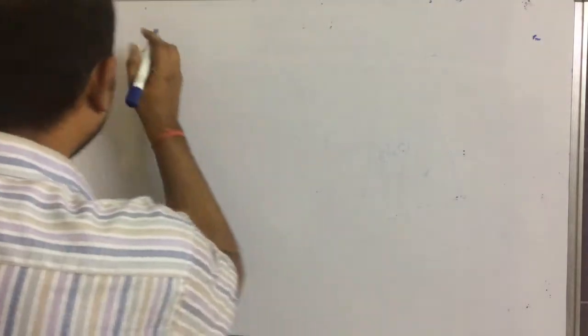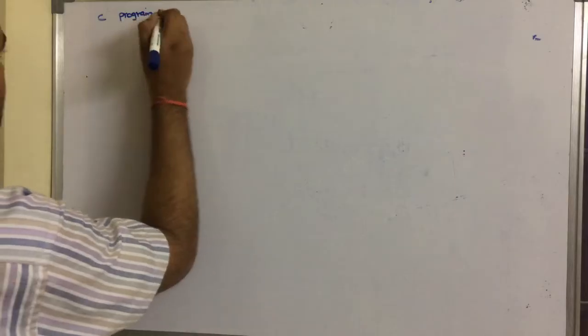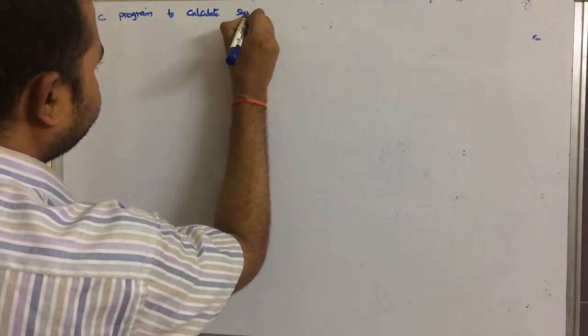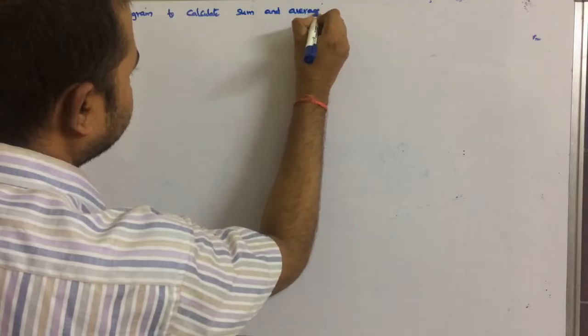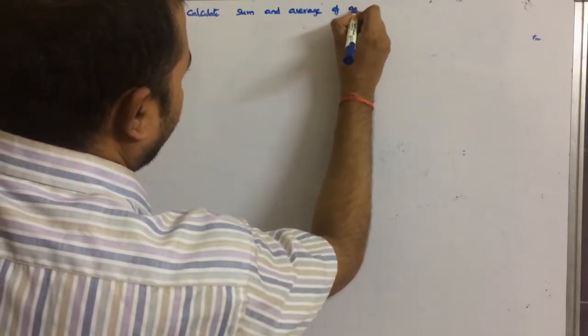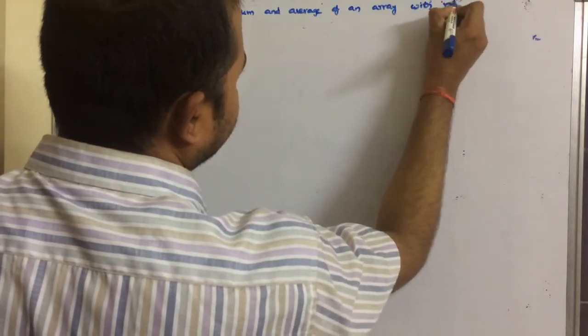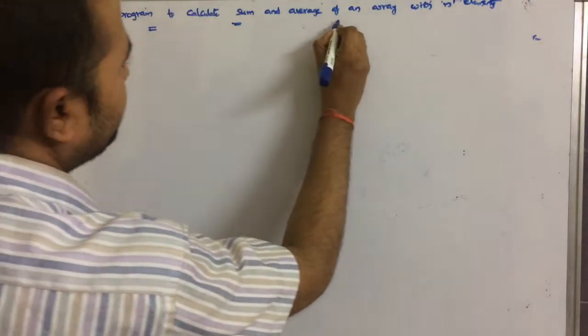In this class we are going to discuss how to calculate sum and average of elements of an array in C. We will write a C program to calculate sum and average of an array with n elements.